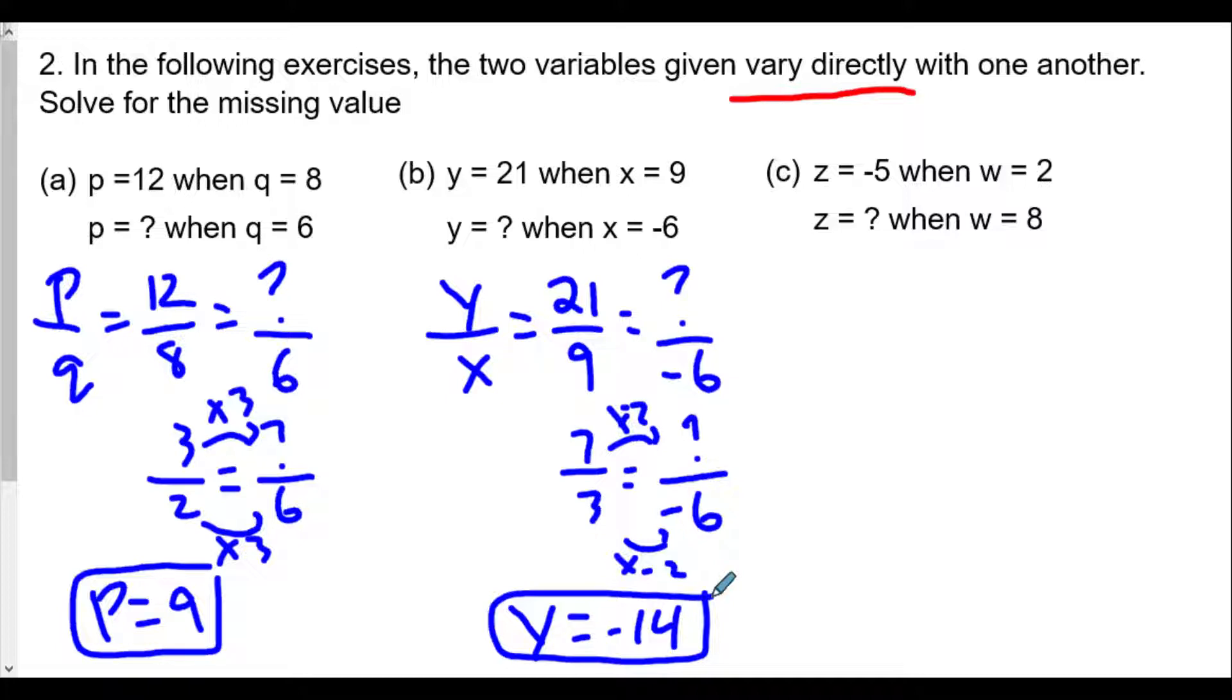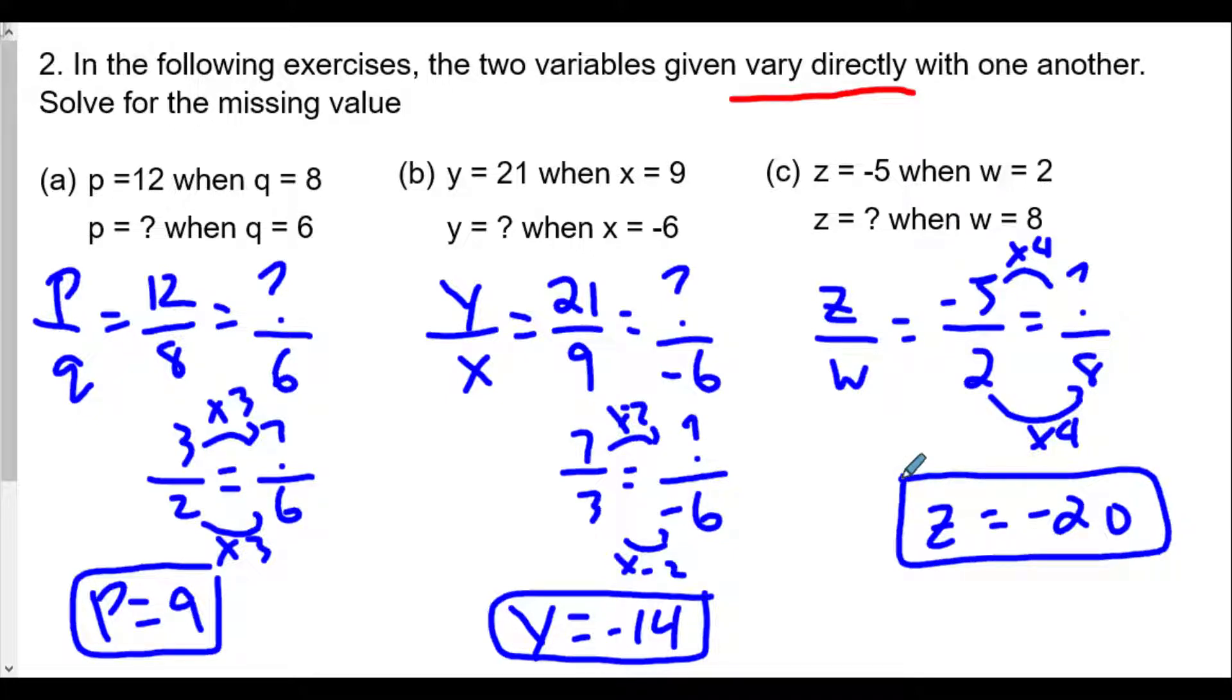And the same way we have z. Z is negative 5 when w equals 2. So z over w, negative 5 over 2 is equal to the unknown value over 8. Well, here we just multiply the denominator by 4, we multiply the numerator by 4. So the z value is negative 5 times 4 or negative 20. So again, when we see a problem that says the variables vary directly, we should be thinking proportion. Think proportion.